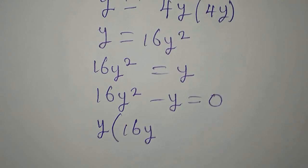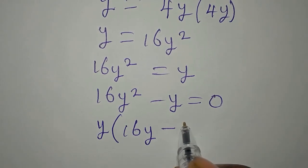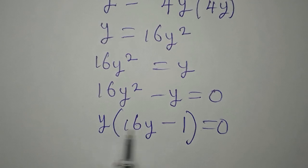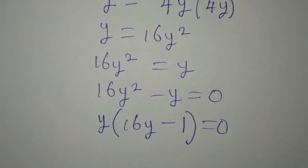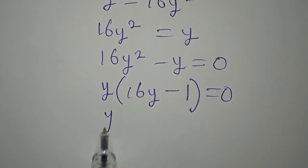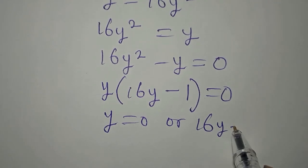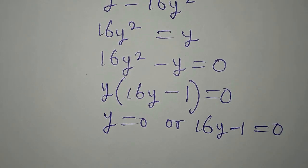From here we factorize, then y times 16y minus 1. This is equal to 0. If you open this bracket you're going to have this back. Now it is either y equals 0 or 16y minus 1 equals 0.